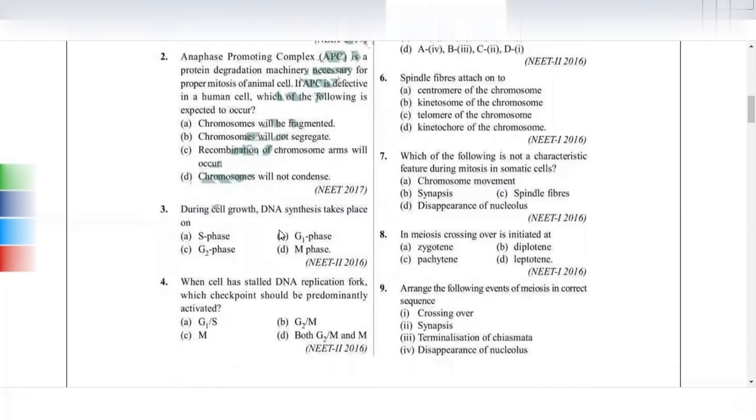During cell growth, DNA synthesis takes place. Synthesis happens in S phase - S for synthesis. When cell has started DNA replication, which checkpoint should be predominantly activated? DNA replication happens in synthetic phase, so the checkpoint that follows S phase would be G2 and M phase checkpoints.